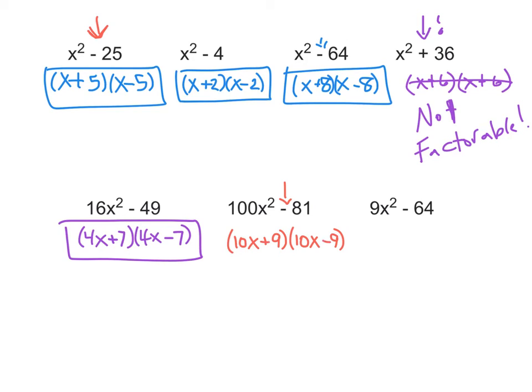The last one on this screen is also a difference of two squares. We have subtraction. 8 times 8 is 64. 3 times 3 is 9. And x times x is x squared. So, we put our parentheses down. We know 3x times 3x gives us that 9x squared. We know that 8 times 8 gives us the 64. And 1 is a plus, and 1 is a minus. And we have factored that.